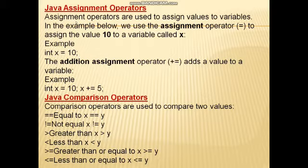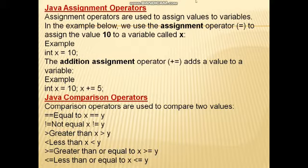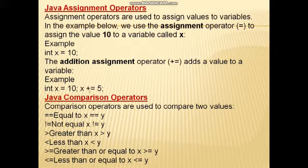Java assignment operators are used to assign a value to a variable. We use the assignment operator equals sign to assign a value. For example, int x = 10 assigns the value 10 to the variable x. The addition assignment operator plus-equals adds a value to a variable. Suppose int x = 10, then x += 5 means x value is 10, and 10 plus 5 becomes 15.